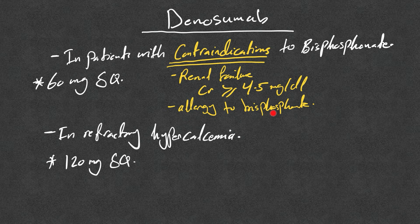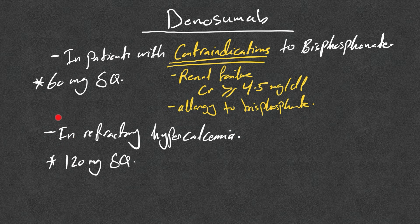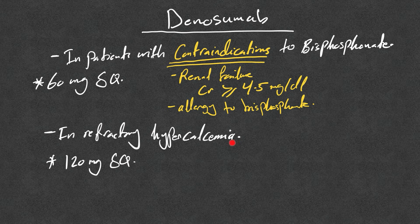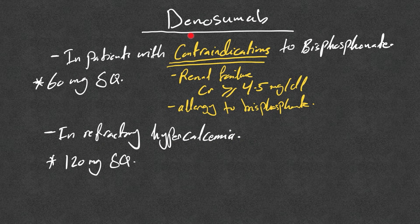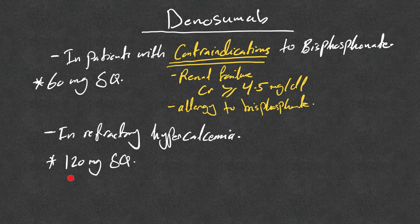And we can use it in refractory hypercalcemia. We use fluid, calcitonin, bisphosphonate, but still the calcium is high. We can add denosumab in refractory hypercalcemia with 120 milligrams subQ.